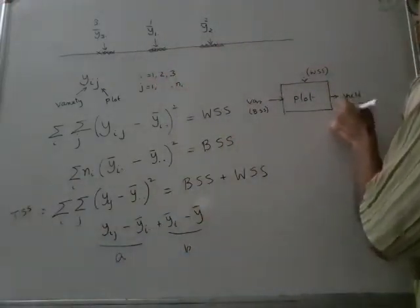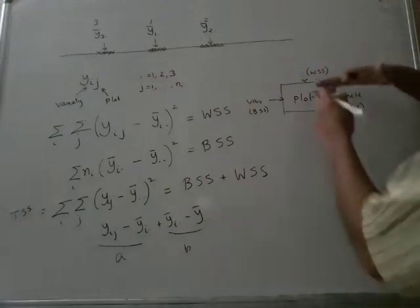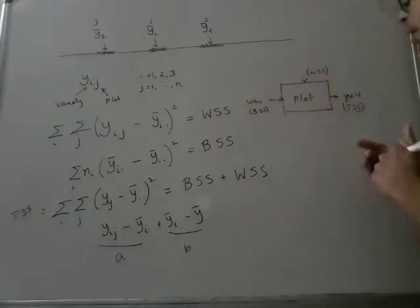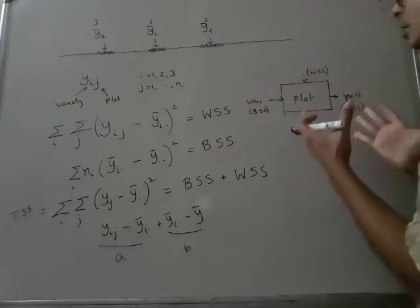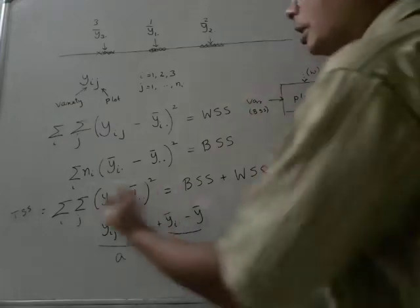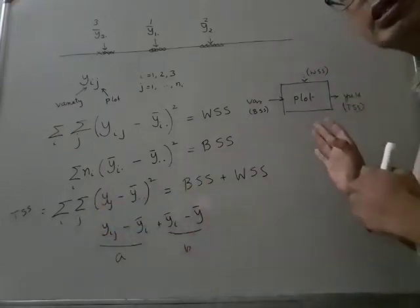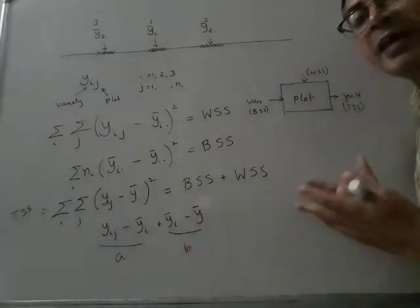So TSS is indeed split up into two parts. One because of each of the input and this captures the intuitive thing as well as it is a rigorously provable algebraic identity. And this is what they call analysis of variance.